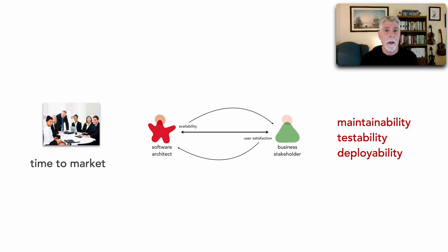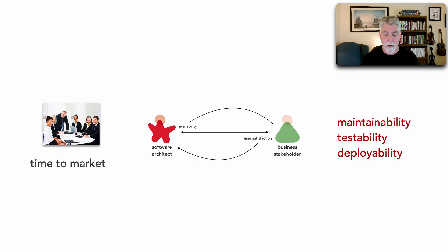In the last lesson, lesson 187, I talked about categories of architectural characteristics, and these are all about the process of making a change. This is the first step in identifying architectural characteristics.